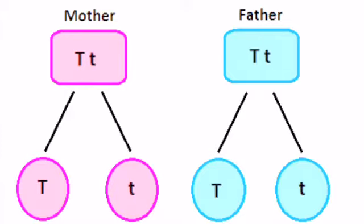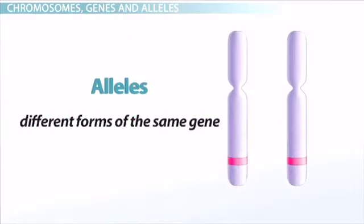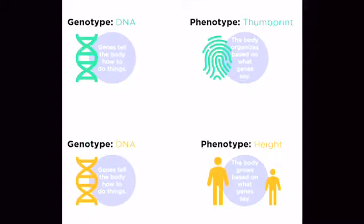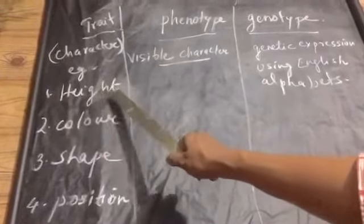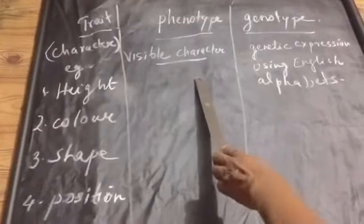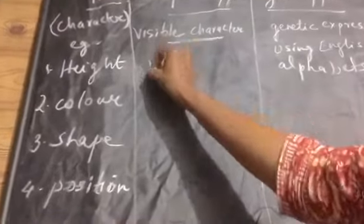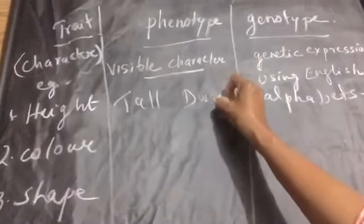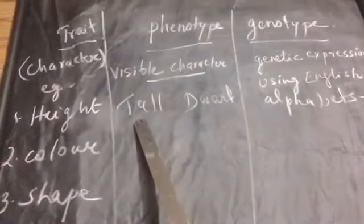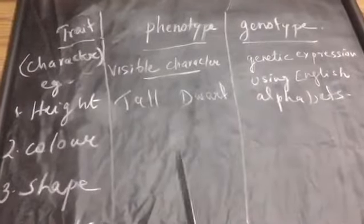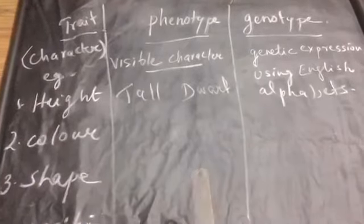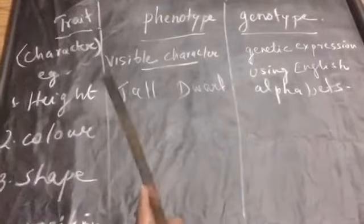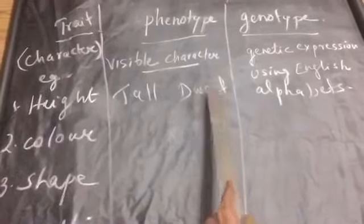Mendel used English alphabets to express the genetic factors, that is the alleles. Phenotype means the visible character or the physical appearance of a trait. For example, for the character height of a plant, the two possible visible forms are tall and dwarf — or tall and short. When talking about Mendel's experiment, we never discuss an average height. That is one of the drawbacks. You have to say two contrast characters: tall and dwarf. These are the two visible forms of the character height.